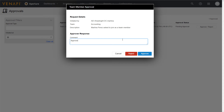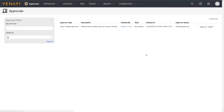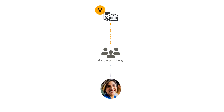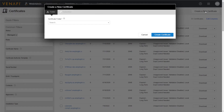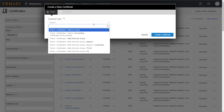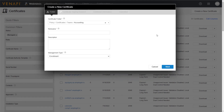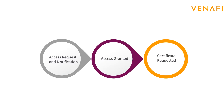Now, once added to the accounting group, Martina is free to request certificates without burdening additional resources. What you've seen here is how easy it is for Martina to join her team, gain approval from her manager, and self-request a certificate without needing to ask or wait on anyone from the machine identity services team.